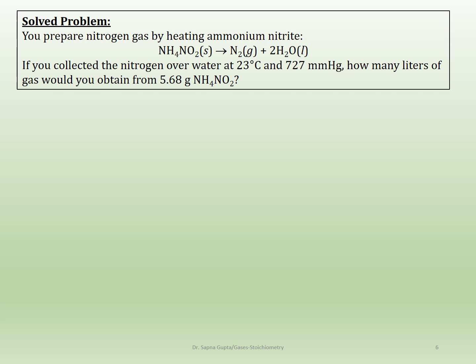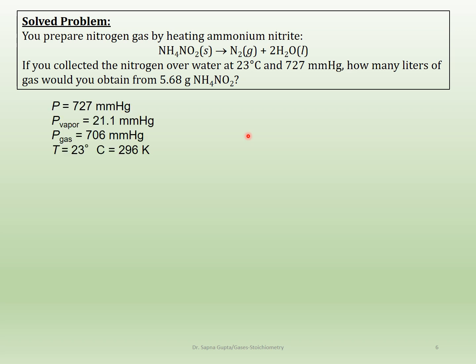Here is an example. Let's say you prepare nitrogen gas by heating ammonium nitrite, and you collect the nitrogen over water at 23 degrees Celsius and 727 mmHg. How many liters of gas would you obtain from 5.68 grams of ammonium nitrite? The pressure given — 727 mmHg — is the total pressure. Since the gas is collected over water, you find the vapor pressure of water at 23 degrees Celsius, which is 21.1 mmHg. So the partial pressure of nitrogen is 727 minus 21.1, which gives 706 mmHg.